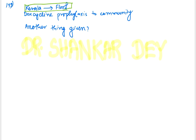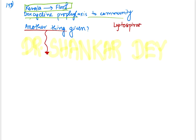Question 149: Following Kerala floods, epidemiologists concerned about public health started doxycycline prophylaxis to the community. An additional substance was also given — the question asked what this substance is. This is for prophylaxis of leptospirosis. According to national level faculties, the answer is zinc phosphide — rat killer poison — for leptospirosis prophylaxis.